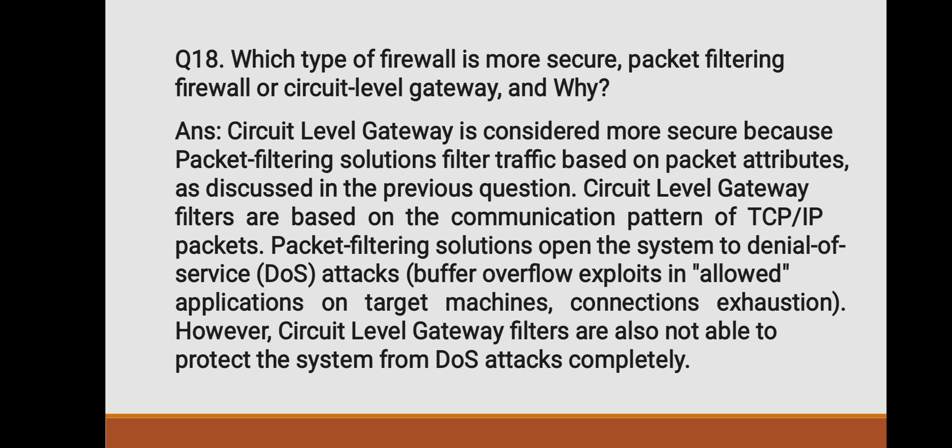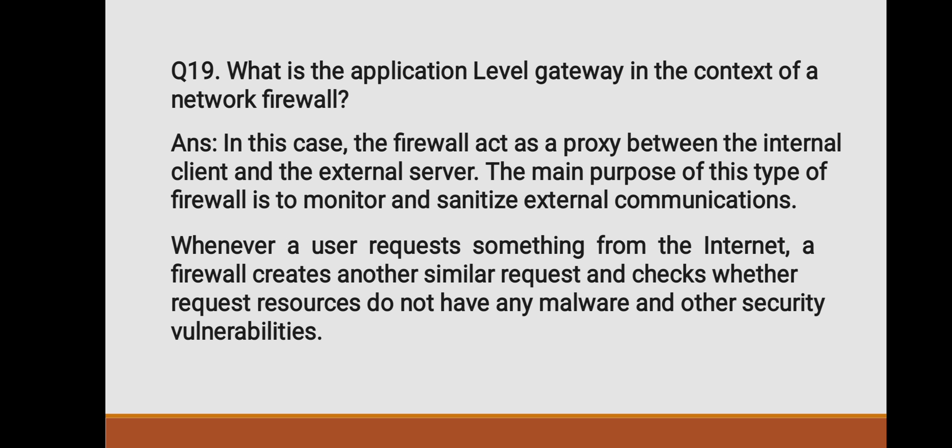What type of firewall is more secure — packet filtering or circuit level gateway, and why? Circuit level gateway is considered more secure because packet filtering filters traffic based on packet attributes, whereas circuit level gateway filters based on the communication pattern of TCP/IP packets. Packet filtering solutions can expose the system to denial-of-service (DoS) attacks, though circuit level gateway filters are also not able to fully protect against DoS attacks. What is application level gateway in the context of network firewalls? In this case, the firewall acts as a proxy between the internal client and the external server, monitoring and sanitizing external communication. Whenever a user requests something from the internet, the firewall creates another similar request and checks whether the requested resources do not have any malware or security vulnerabilities.